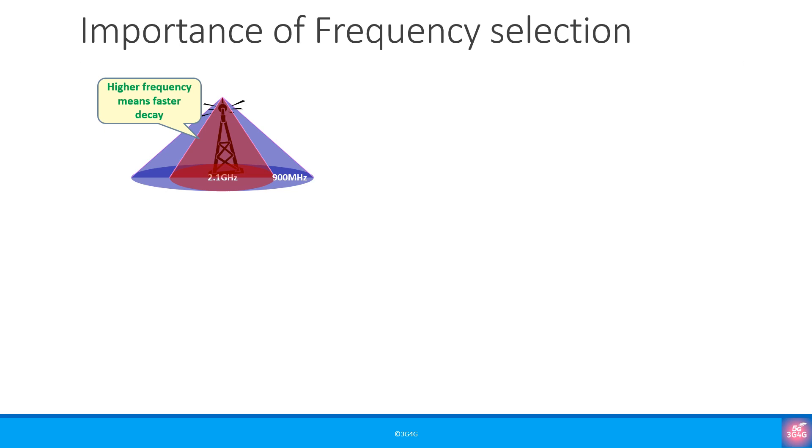For example, for exactly the same setup like height, power, etc., higher frequency will decay faster than the lower frequency. This means the higher the frequency the smaller the cell size generally. Here, you may be tempted to think that lower frequencies are better because you would get a larger cell.